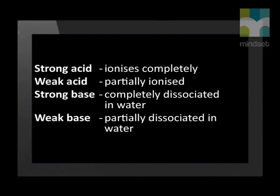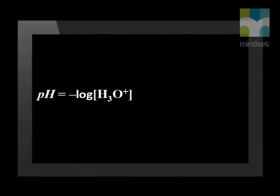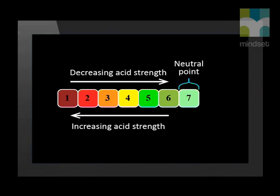The pH scale is also another way to determine the strength of an acid or a base. The pH scale is defined as the negative log of the concentration of the hydronium ion. This is an illustration of a section of the pH scale. pH 7 represents a substance or solution which is neutral, or simply a neutral point.